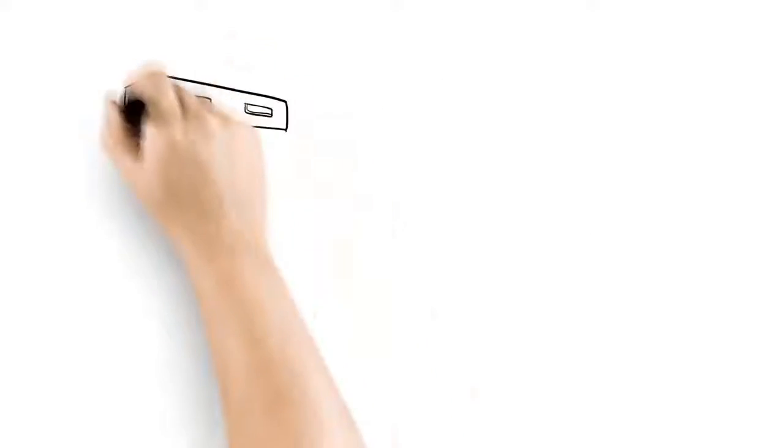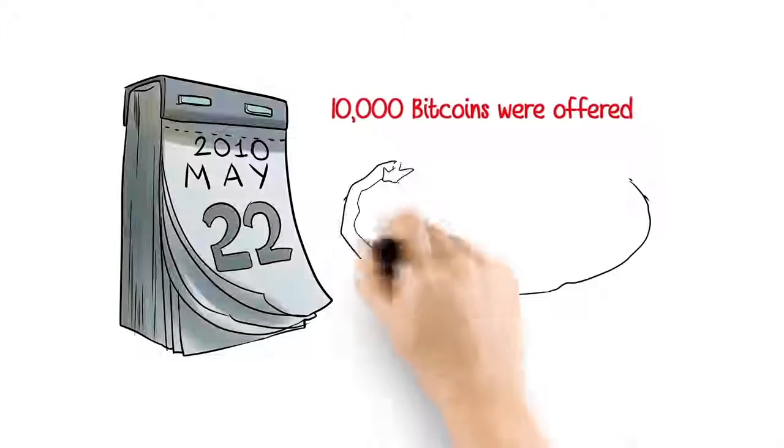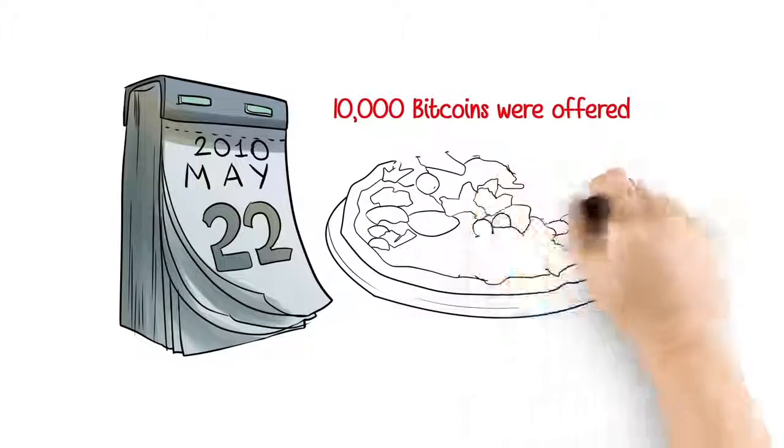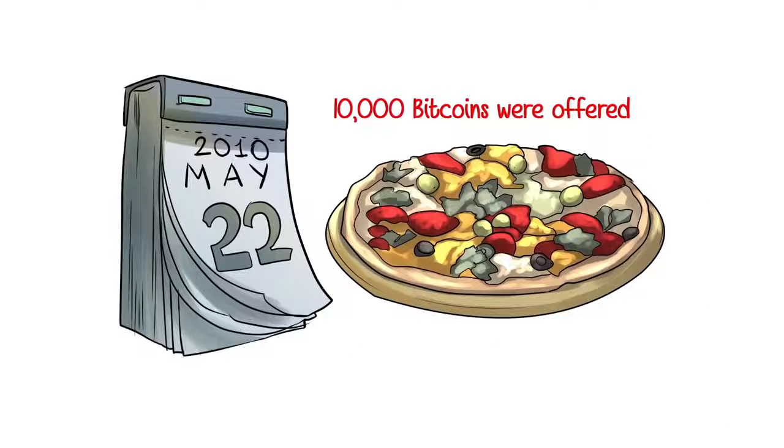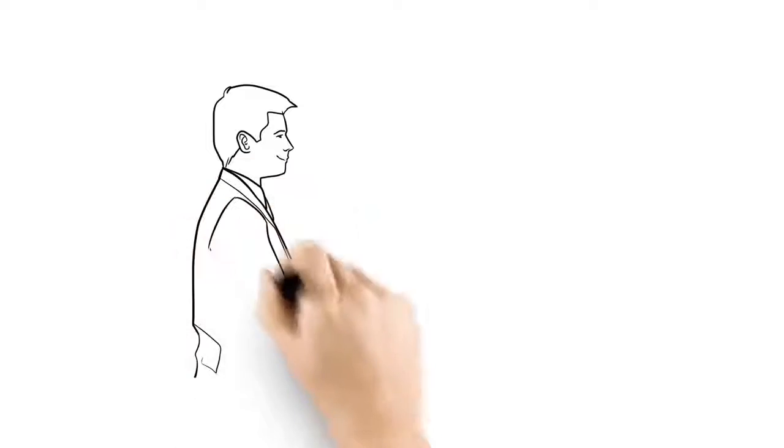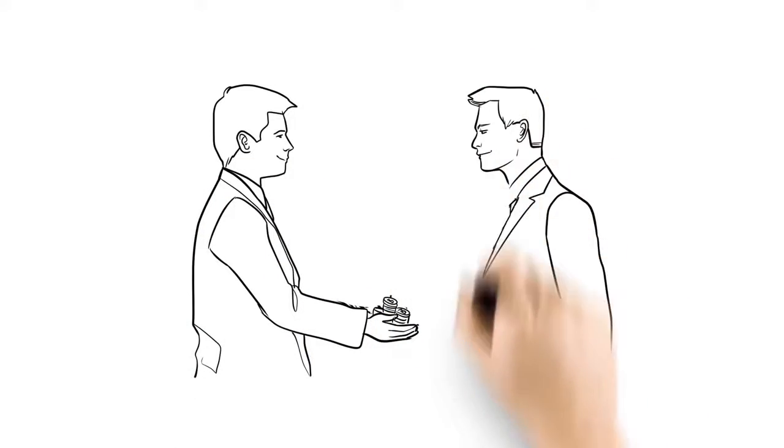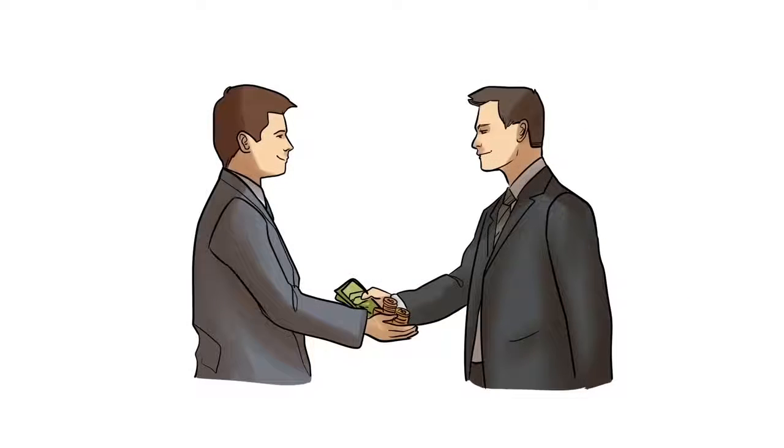Then on May 22, 2010, the first transaction happened. 10,000 Bitcoins were offered for a pizza. When that happened, all of a sudden, Bitcoin had a value. Then demand started and more people started asking to buy Bitcoin, but the people that had it didn't want to sell it so cheap.